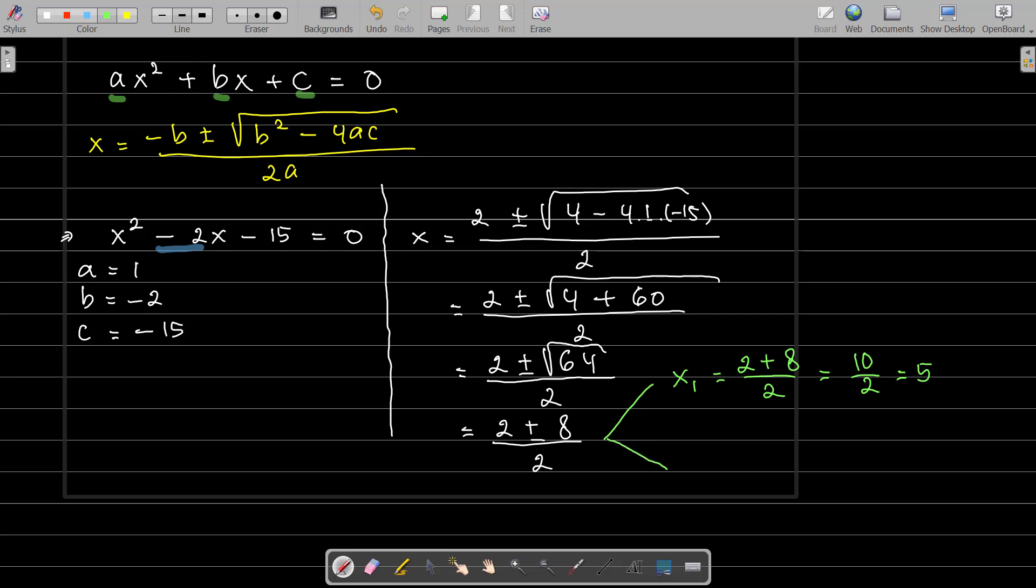And the second answer is x₂ = (2 - 8) / 2 = -6, divided by 2 is -3.